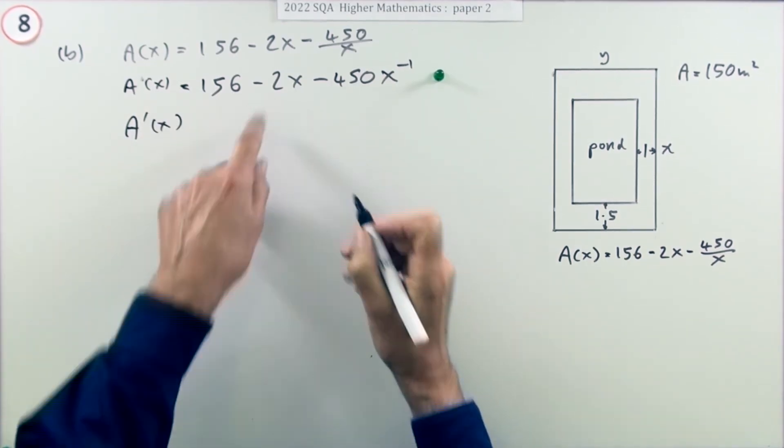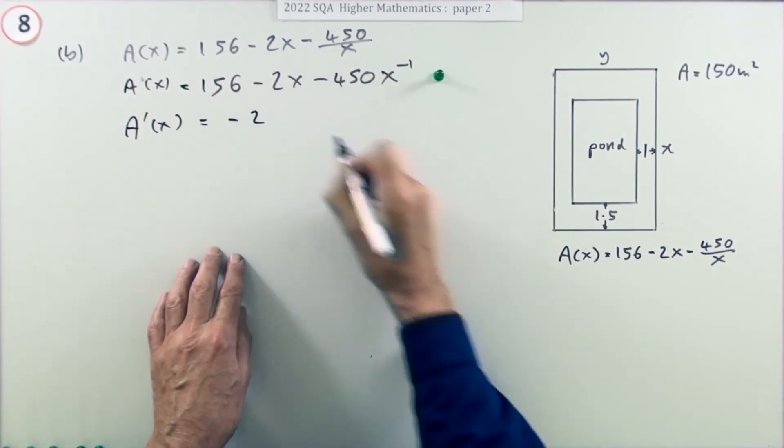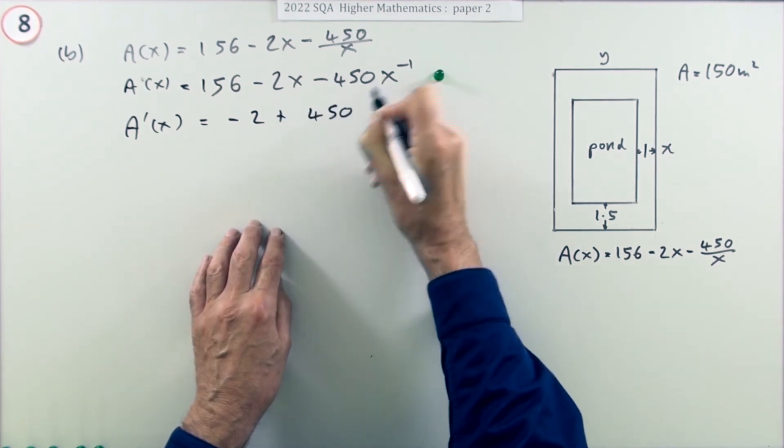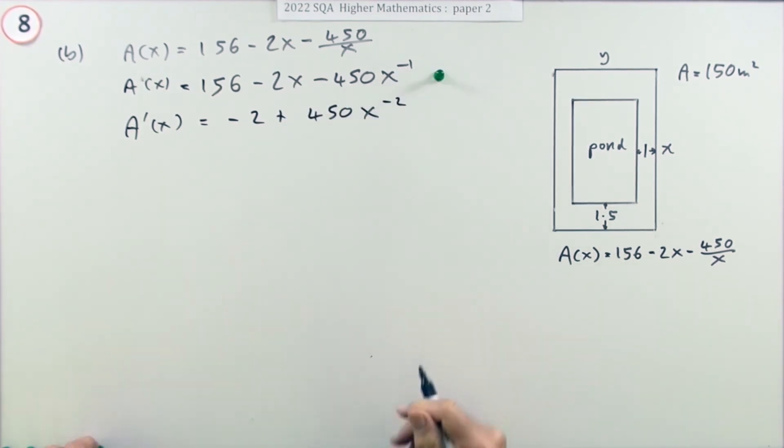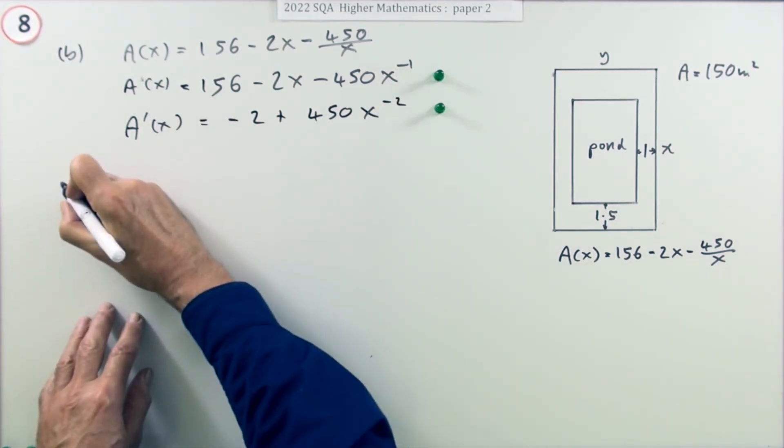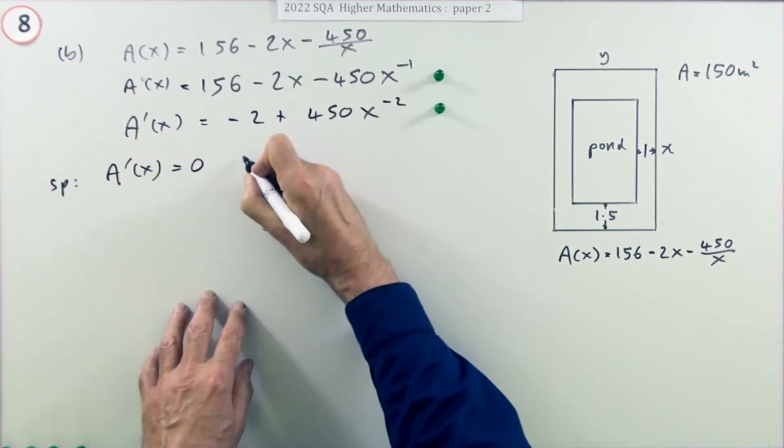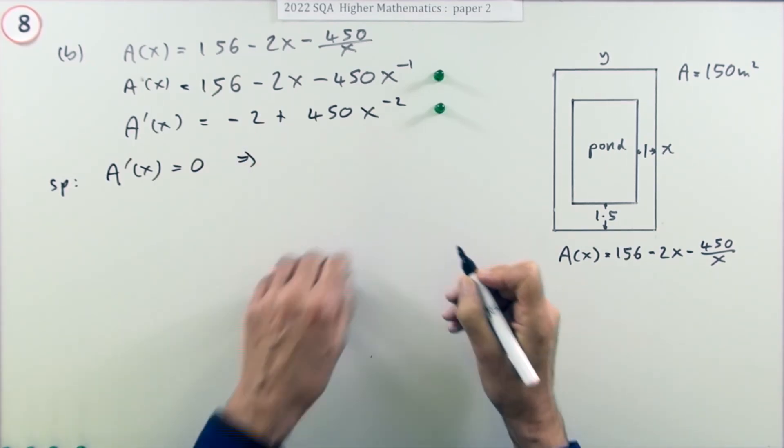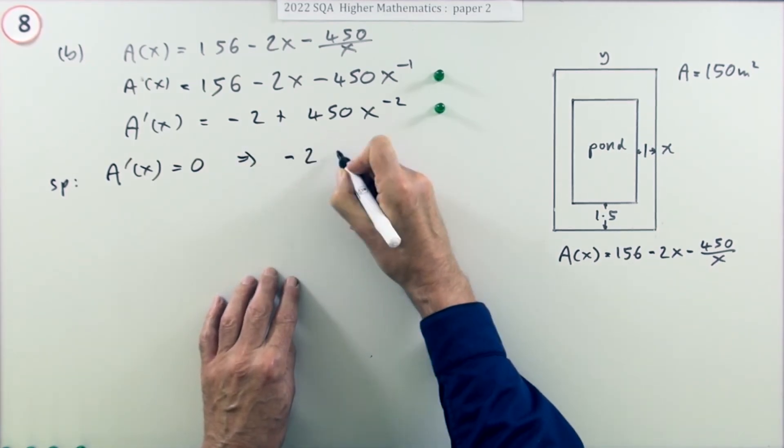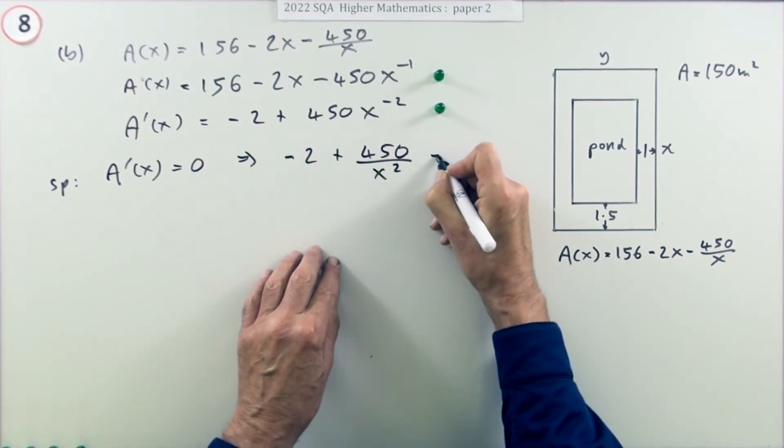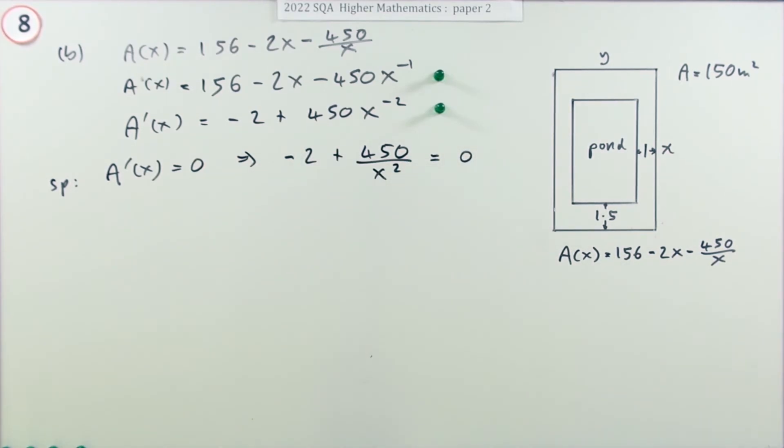Now differentiate it. That'll go, that just becomes negative 2, multiply by the power, take one off the power. That gets a mark. If there is an optimum value, a stationary point, that means A'(x) should equal zero. That means this thing should equal zero. I think at this point I'm going to pop that back underneath. That should equal zero. That's worth a mark.